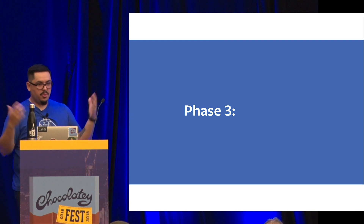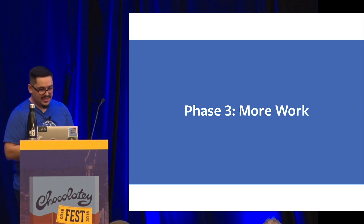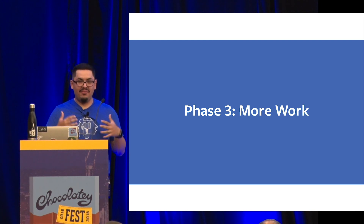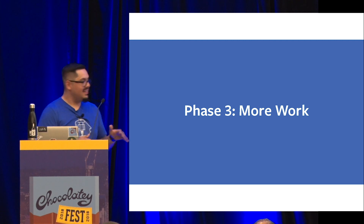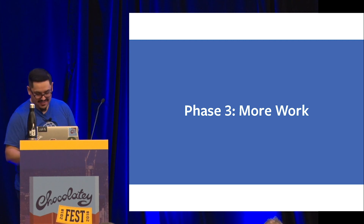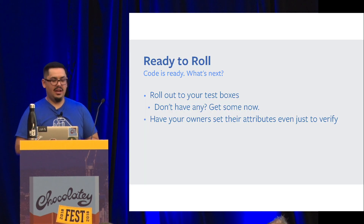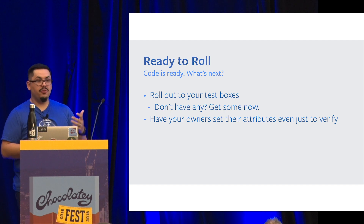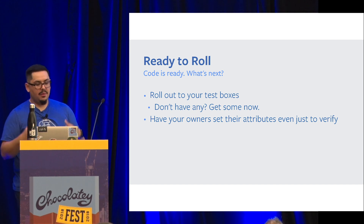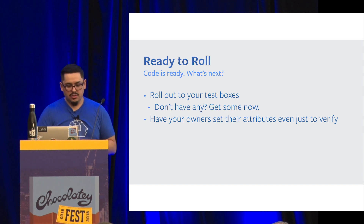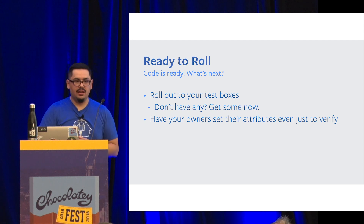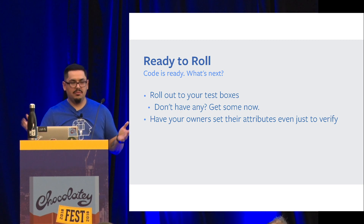So phase three — profit. Just kidding, it's more work. You're ready to roll, you've written your code, now you have to start rolling stuff out. Breaking prod is significantly more expensive than breaking your test machines. So roll it out to your test boxes — this is a good time to convince management to let you get some test VMs. If you break those and reboot them, nobody cares.